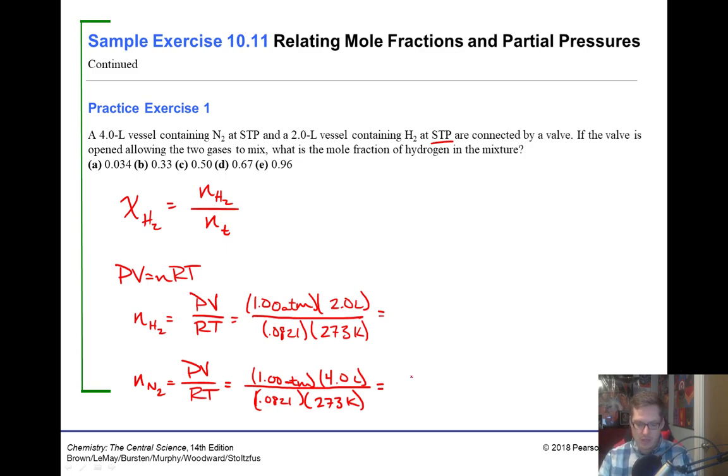So 2 divided by 0.0821 times 273. So I got 0.08923 moles of H2. And then for the other guy, it's essentially the same thing, just times 2, because it's 4 liters instead of 2 liters. So I got 0.17847 moles of N2. Notice that I'm not really caring about my sig figs here. Number one, because this is a multiple choice question, all these answers have two sig figs. So that's a little bit of a test taking strategy. Number two, I don't really want to round these values early because they're not my final answer that I'm at yet.